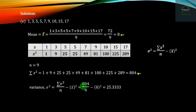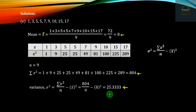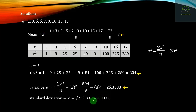Here, the variance is 4 by 9 minus 8 squared, or 25 divided by 3.333. The standard deviation is the square root of 25 by 3.333, which equals 5 by 0.332. The standard deviation result is computed from the square root of the variance. The number of errors on each of 200 typescripts was monitored to establish this distribution.